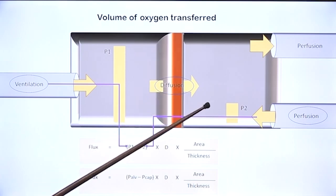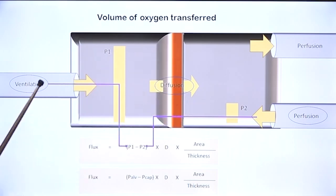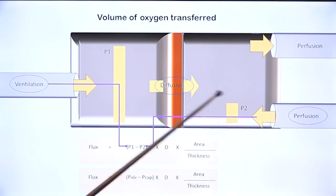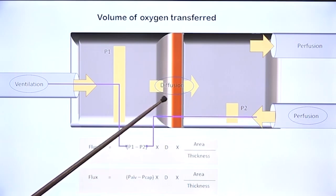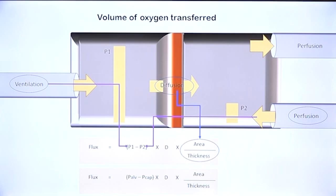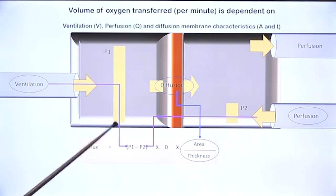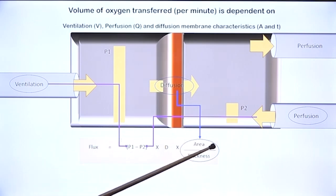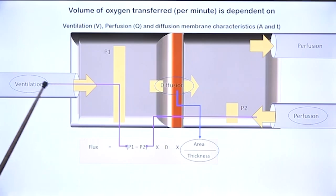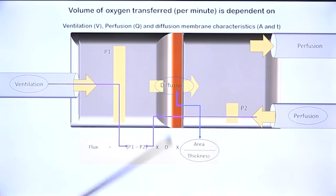For effective oxygen transfer you need good ventilation, good perfusion, and effective diffusion. Diffusion is affected by properties of the diffusion membrane. Volume of oxygen transferred per unit time across the respiratory membrane is dependent on all three of these phenomena.